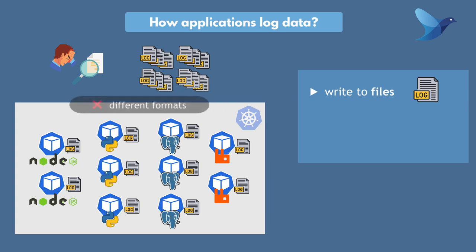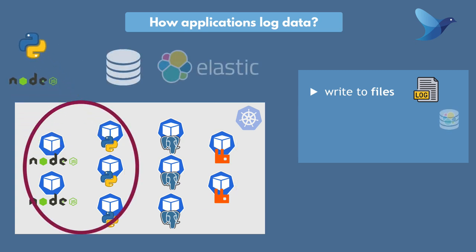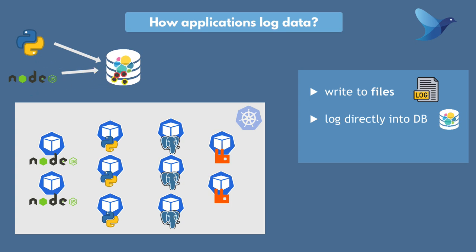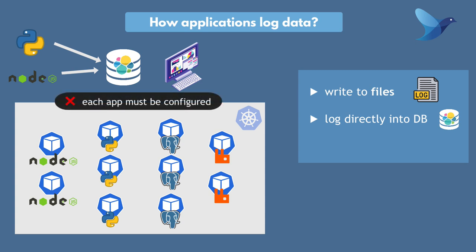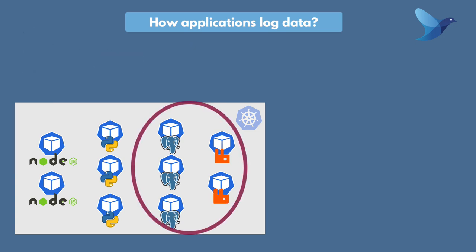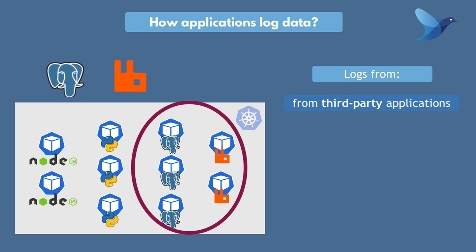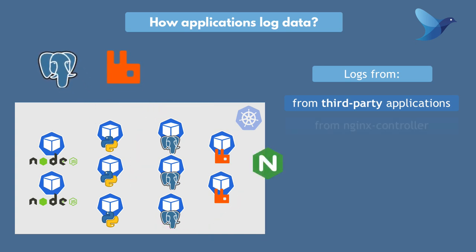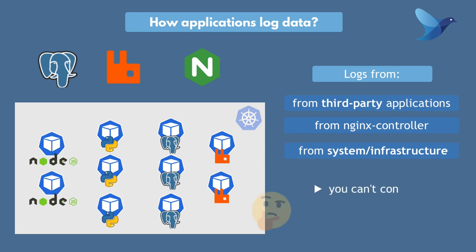Also, logs will be in different formats coming from different applications, like the timestamps and log levels, etc. Another option could be to log directly into a log database like Elastic, for example, to then have a visualization of this data. However, in this case each application developer must add a library for Elasticsearch and configure it to connect to Elastic and send those logs, and also each developer must configure the proper format. What about third-party applications in your cluster, like databases and message broker? Also in Kubernetes, requests go through an Nginx controller — so what if you want to see those logs too, or what about system logs? You can't control how they log, so how do you collect logs from all these different data sources?